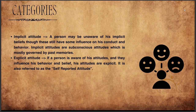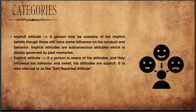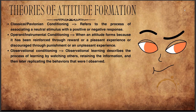Coming on to the categories of attitude — there are two: implicit and explicit. In implicit attitude, a person may be unaware of their implicit beliefs, though these still have some influence on their conduct and behavior. These are mostly governed by past memories. Explicit attitude is when a person is aware of their attitude and it rightfully influences behavior and belief. It is also referred to as a self-reported attitude.